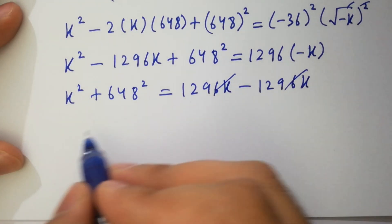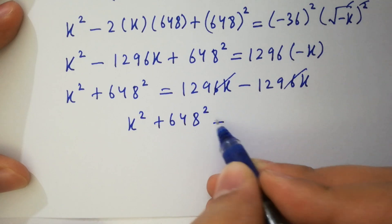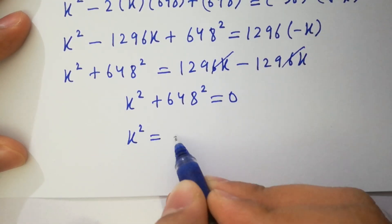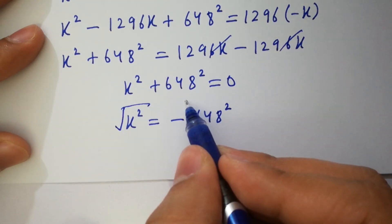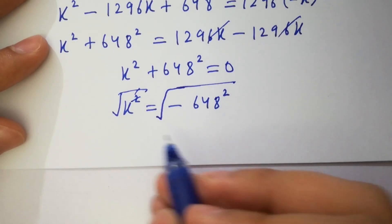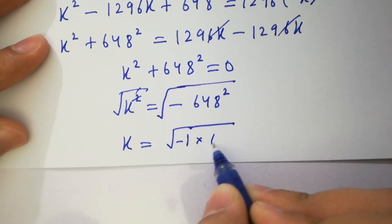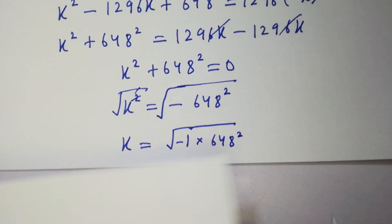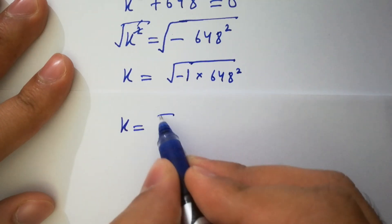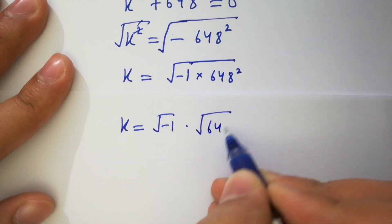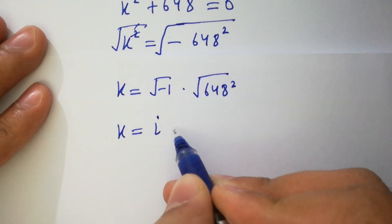We have k square plus 648 square equal to 0, so k square equals minus 648 square. Taking square root on both sides, the square cancels from square root and we have k equal to square root of minus 1 times 648 square, which gives k equal to square root of minus 1 times square root of 648 square.